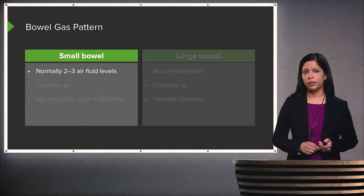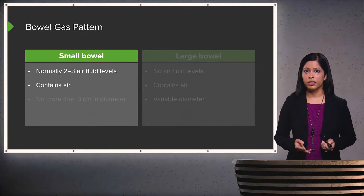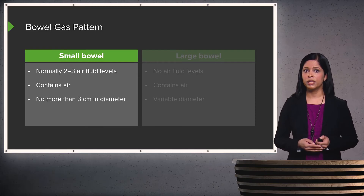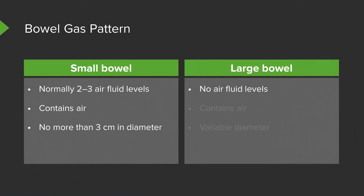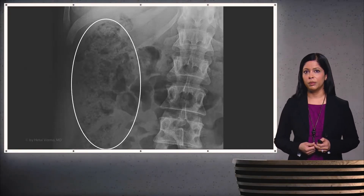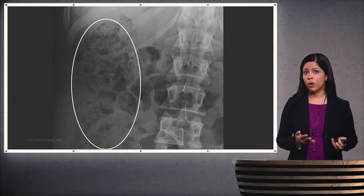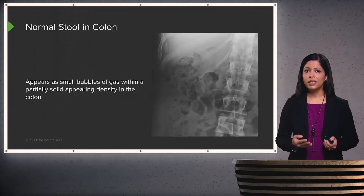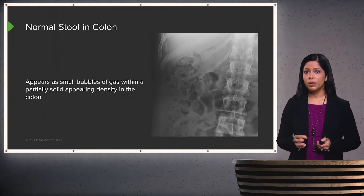How do you assess bowel gas pattern? A normal bowel gas pattern in the small bowel usually has about two or three air-fluid levels, and the bowel is not more than about three centimeters in diameter. Large bowel usually doesn't have air-fluid levels because much of the fluid is absorbed there; it does contain air normally, and can have a very variable diameter. This coned-down view of the right upper abdomen shows a somewhat mottled appearance — this is an example of normal stool within the colon, appearing as very small bubbles of gas that are partially solid, within the expected location of the colon.